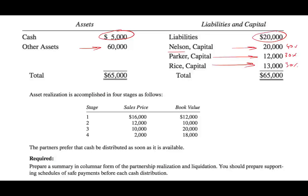They sold their assets in installments — they have four sales. The first sale, they sold it for more than the book value and generated a gain of $4,000. Copy this information down because we're going to be using it in the next slide.